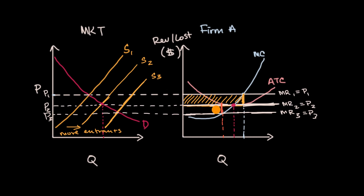But what happens in the long run? Firm A and other firms running an economic loss would exit the market, shifting the supply curve back to the left. We would eventually return to the reality where firms have no economic profit, the market is allocatively efficient with no deadweight loss, and firms are producing at the minimum point of their average total cost curve — known as productive efficiency.